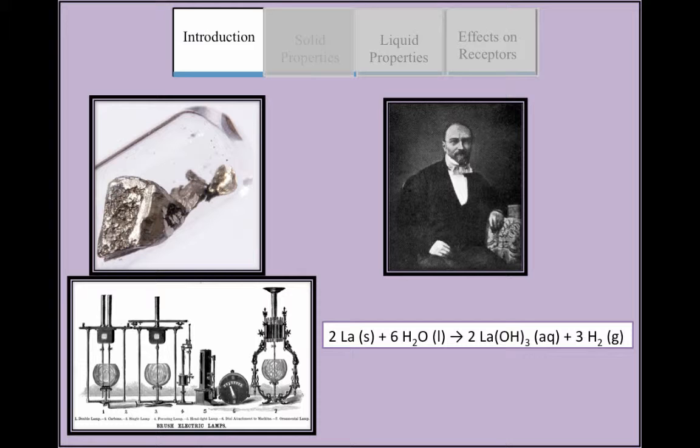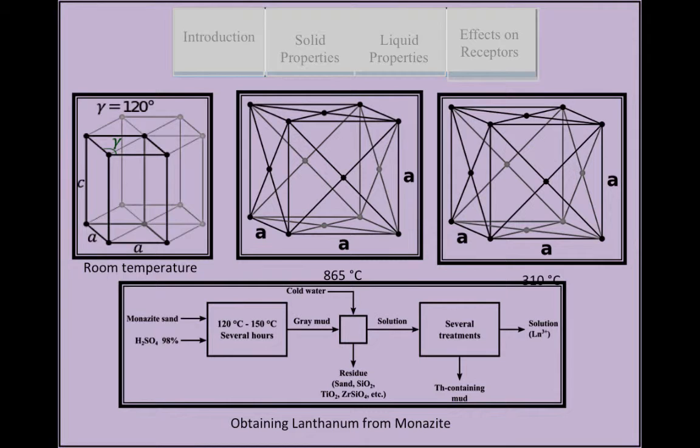Lanthanum oxide is also used to improve alkali resistance of glass and make optical glasses because it has a high refractive index, which means it is dense and is able to bend light more.